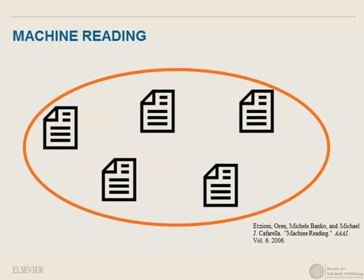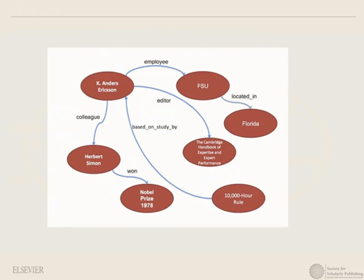Looking at everything all at once lets us produce the kind of large-scale knowledge graphs that really know about the world, know about entities in the world. You get graphs that connect across different domains — from information about K. Anders Ericsson to the fact that he was the inspiration for the 10,000 hour rule, to his colleague Herbert Simon, to the fact that Herbert Simon won the Nobel Prize. This ability to produce a knowledge map is really powerful for hypothesis generation and search across different domains.